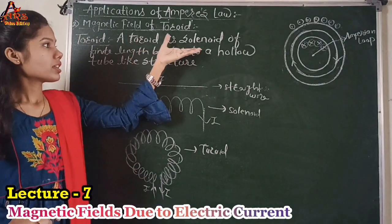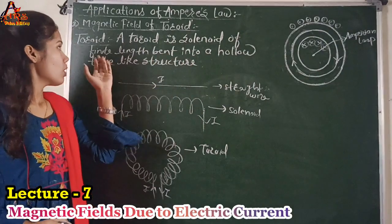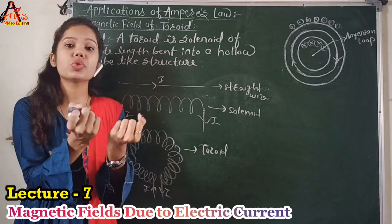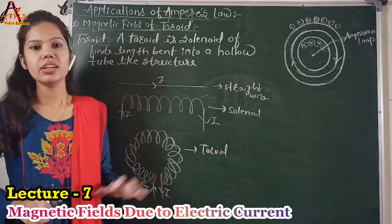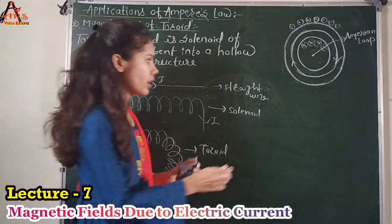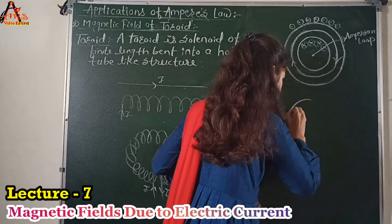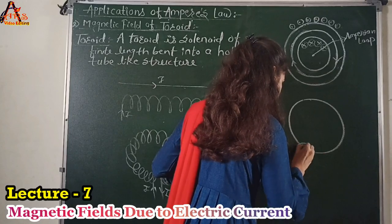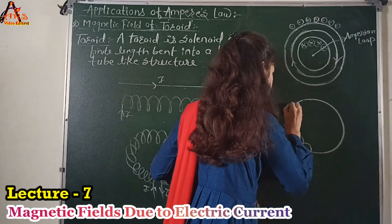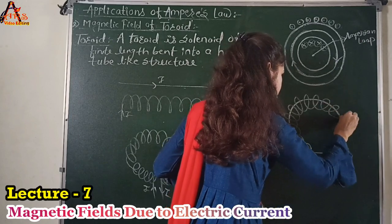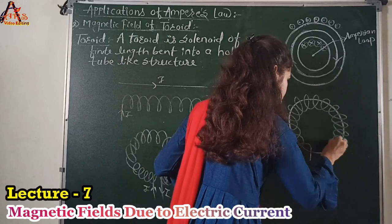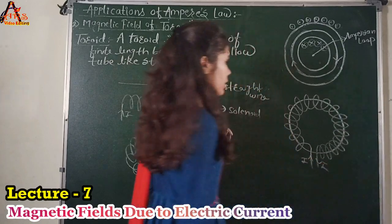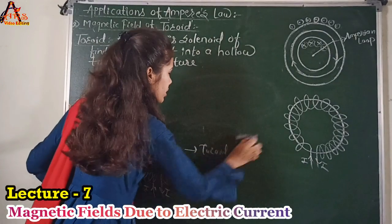A toroid is nothing but the solenoid — it is an endless solenoid of finite length that is bent into a hollow tube-like structure. That resultant tube-like structure having a number of turns of wire is called a toroid. This is the current flowing through this toroid.